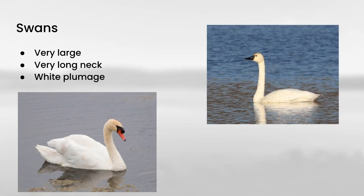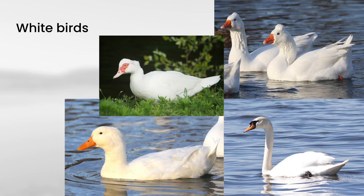And then we have swans, which are very large — they're among the largest birds. They have very long necks, even compared to geese, and mostly they are strikingly white. And that makes for a good transition to domestic forms of both ducks and geese that can be completely white. In these photos, the two birds on the left are both ducks, the two birds in the top right photo are geese, and the bottom right one is a swan.